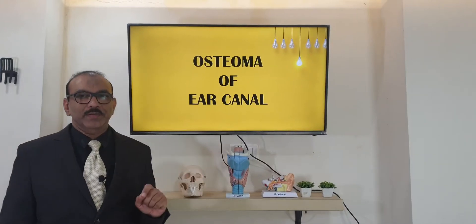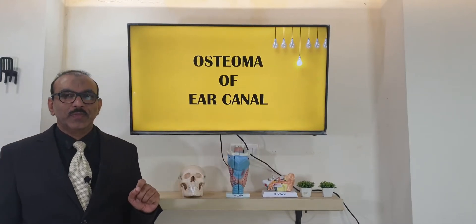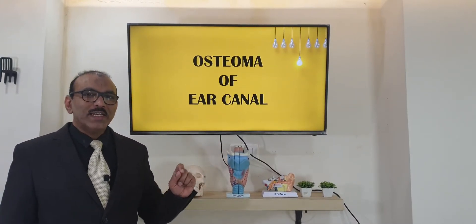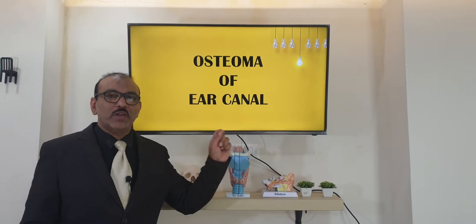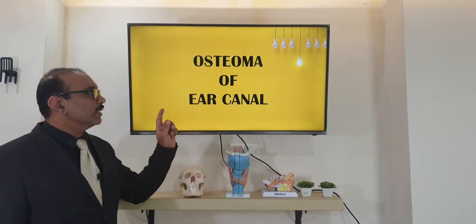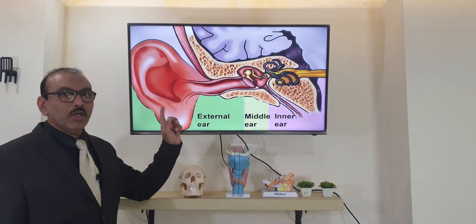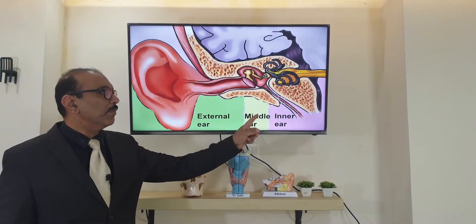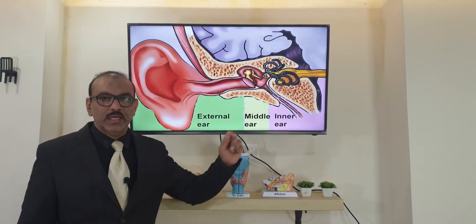Osteoma of external ear. First, let us see the structure of the ear. The ear can be divided into three parts: external ear, middle ear, and inner ear.